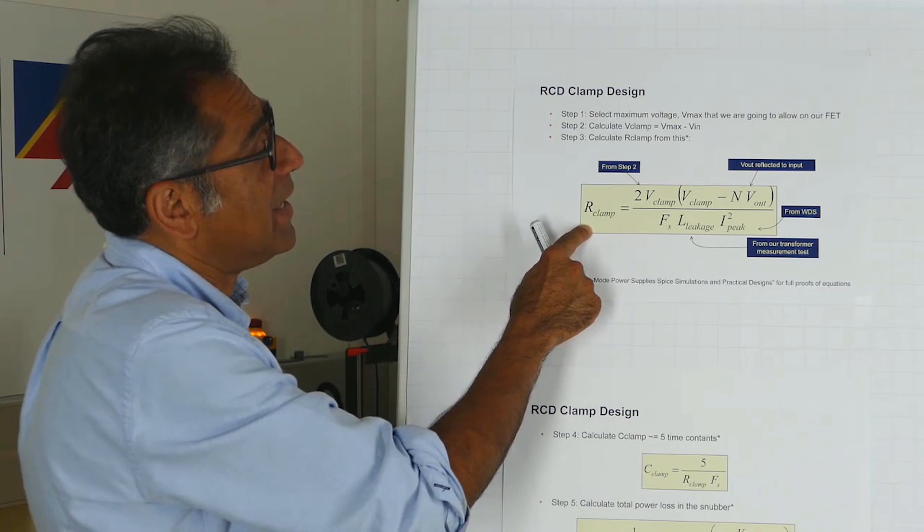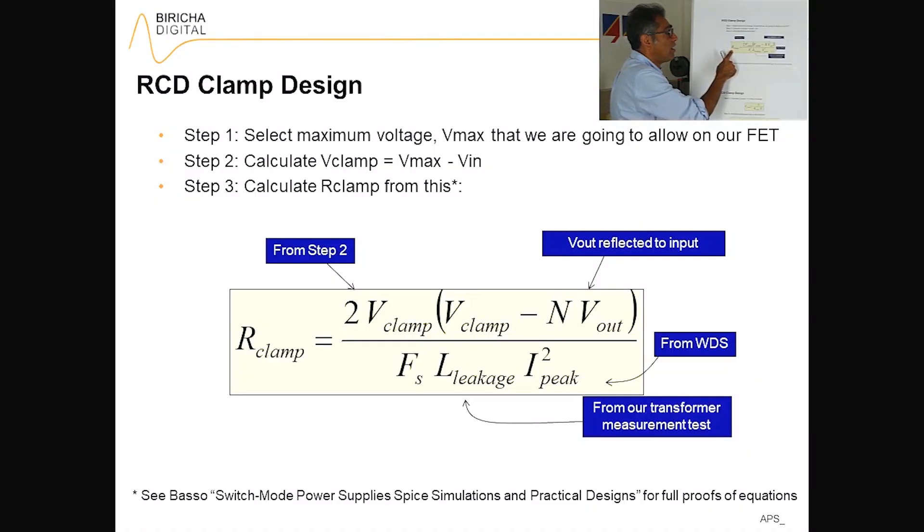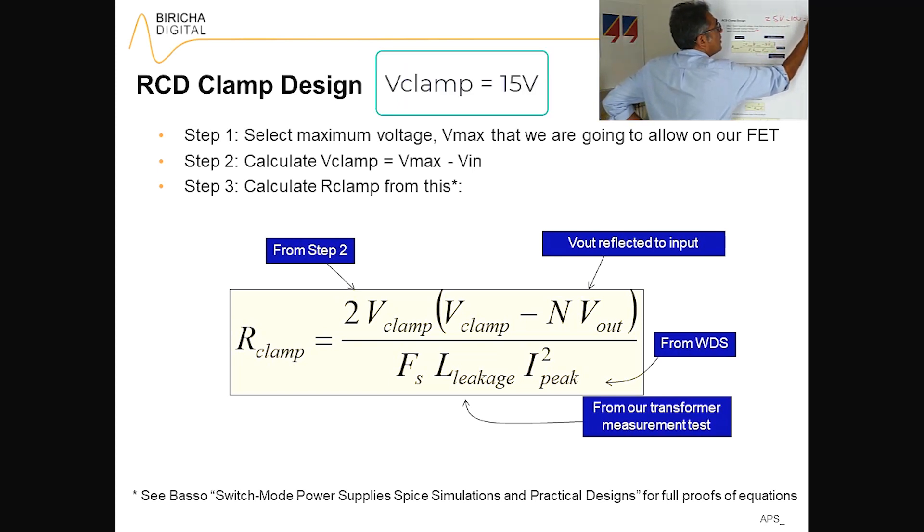So we'd like to calculate the value of our clamp. Okay, we just worked out the value of V-clamp. So first you select the maximum voltage that you can tolerate. We said that was 25 volts. Then we said that you calculate the V-clamp. V-clamp is V-max, 25 volts, minus the input voltage. In our case we said it was 10 volts, and therefore you're left with 15 volts.